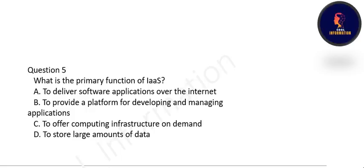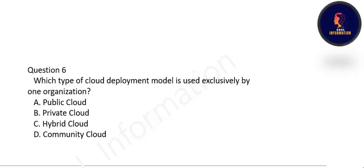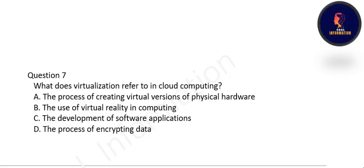Next one: what is the primary function of IaaS? The primary function of IaaS is to offer computing infrastructure on demand — option C is correct. Next question: which type of cloud deployment model is used exclusively by one organization? It is private cloud — option B is correct.